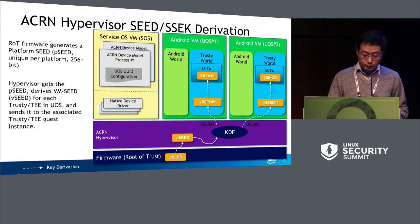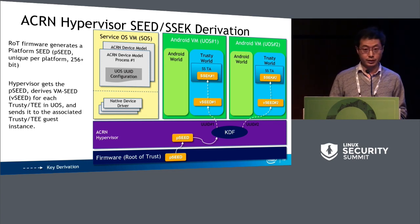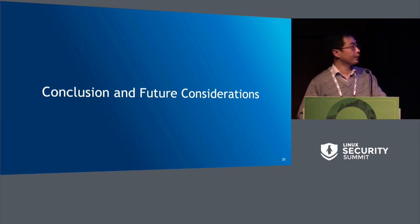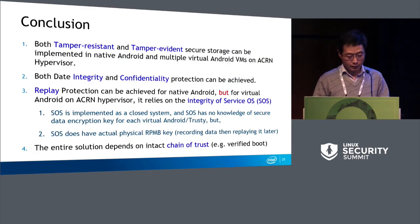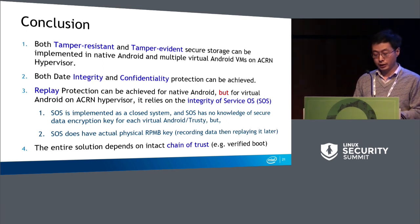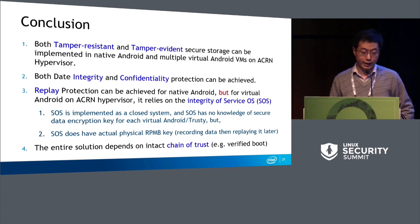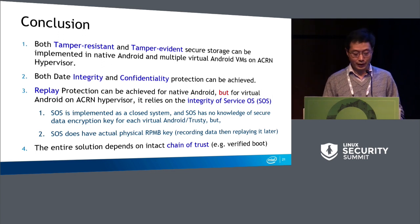This is how data confidentiality protection works on top of this virtualization system. Now let's come to conclusions and some future considerations for improvement. We know that we can provide tamper-proof and tamper-evident secure storage in native Android and in this virtualized environment which can support multiple Android VMs. We can also provide data integrity and confidentiality protection. For replay protection, we can achieve it for native Android, but we have a problem for virtual Android on top of the ACRN hypervisor.